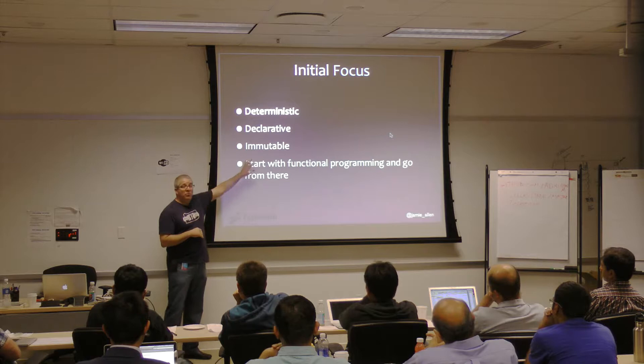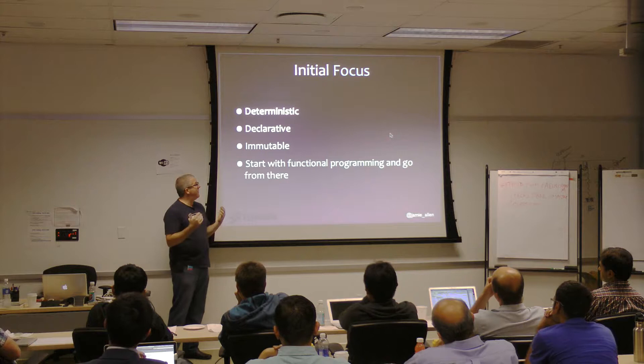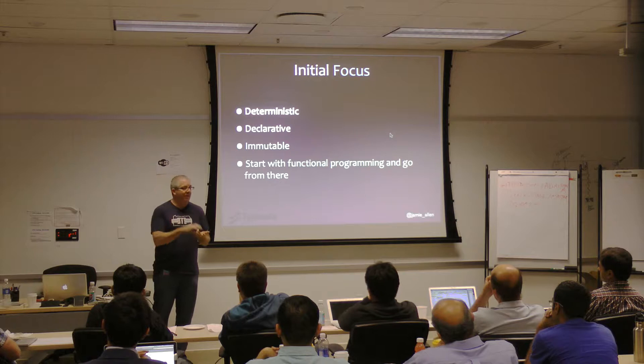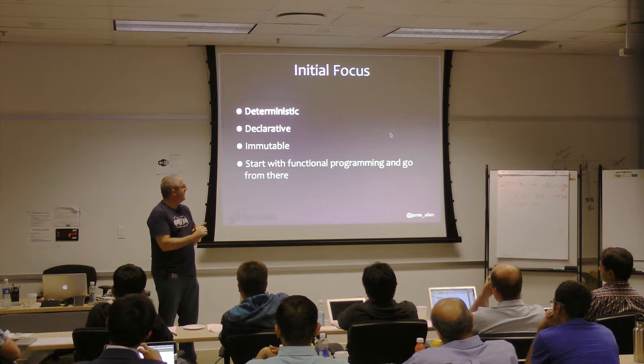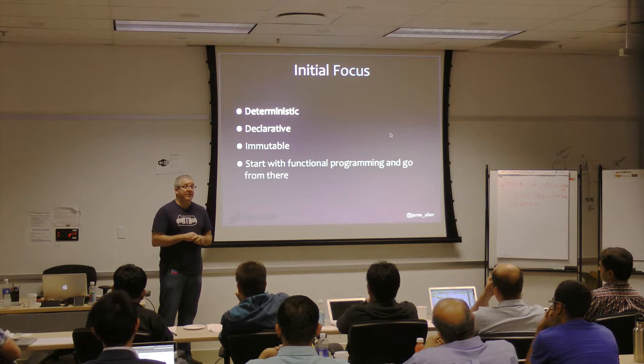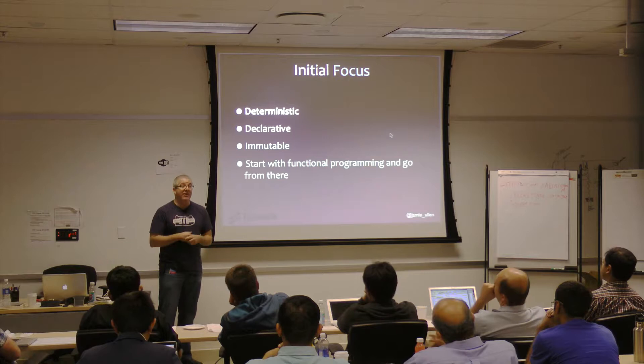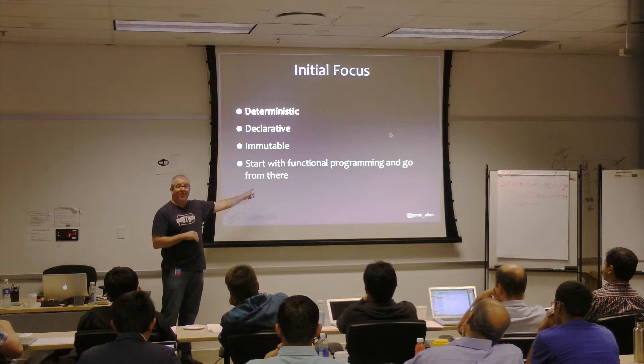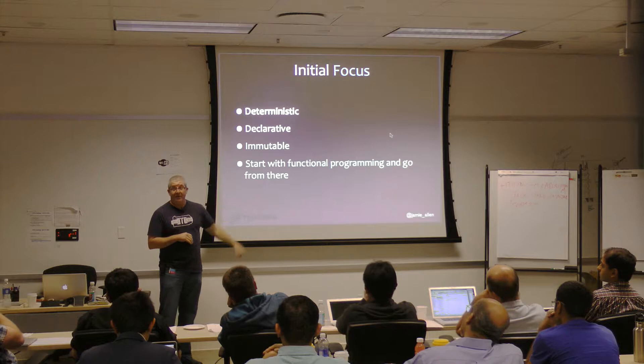Stay immutable as long as possible. Start with functional programming concepts — immutability, referential transparency, first-class functions. There will be times when optimizing that we have to drop out of this. Generally, allocation is pretty cheap on the JVM, but for some algorithms you may want to drop down to an imperative style. Nothing will be faster on the JVM than a while loop, so keep that in mind.